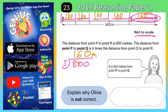So Olivia is saying that it's actually 600 metres from point P to Q. Well, P to Q is actually four lots of 160, so we need to figure out what four lots of 160 actually is — that's how long it would actually be.